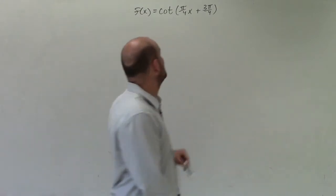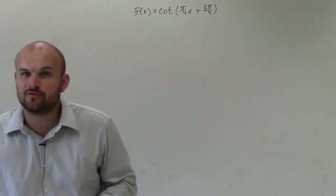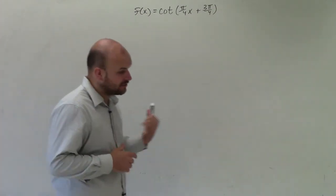Welcome, ladies and gentlemen. So what I have here is f of x equals cotangent of pi over 4x plus 3 pi over 4. And what I'd like to do is show you how to graph this equation, or graph this function.